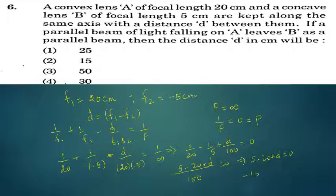Minus 15 plus d equals 0. So d equals 15 centimeters. The correct option is option 2, 15 centimeters.